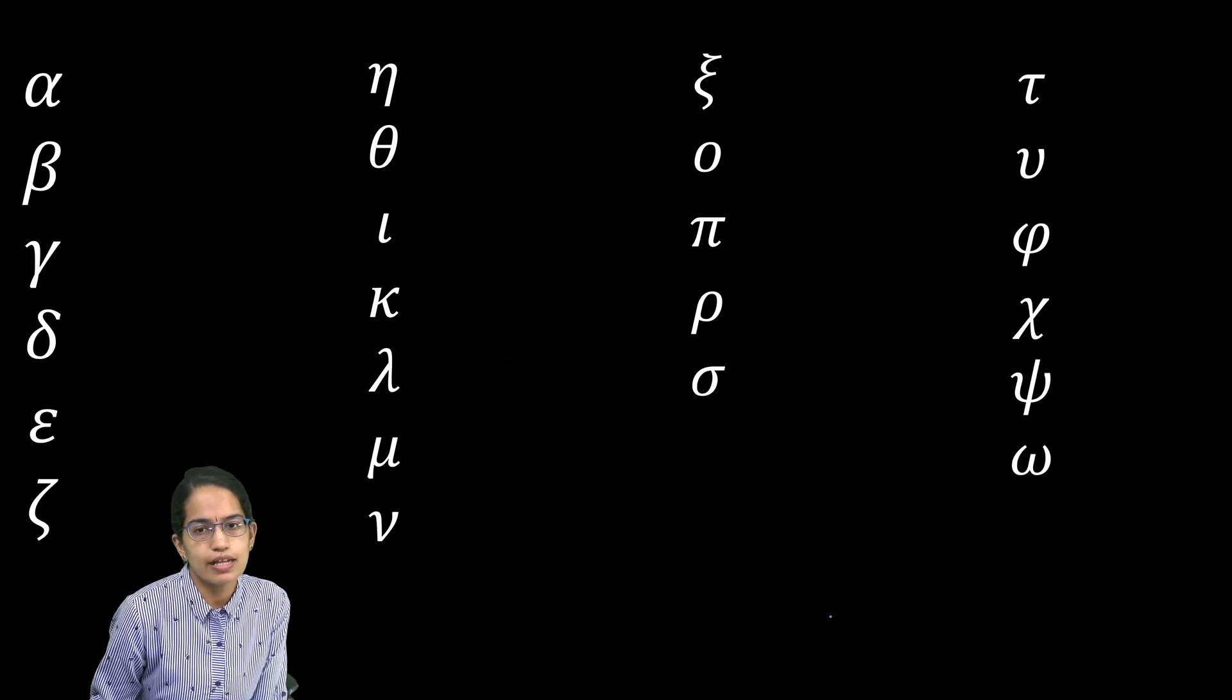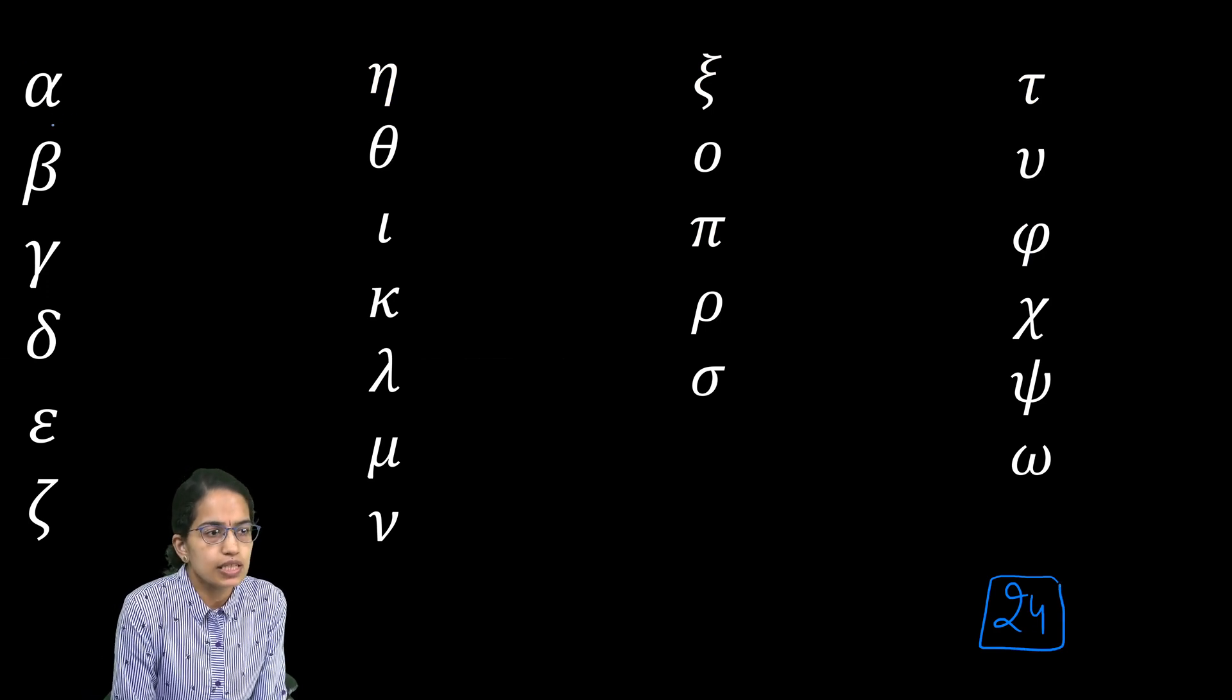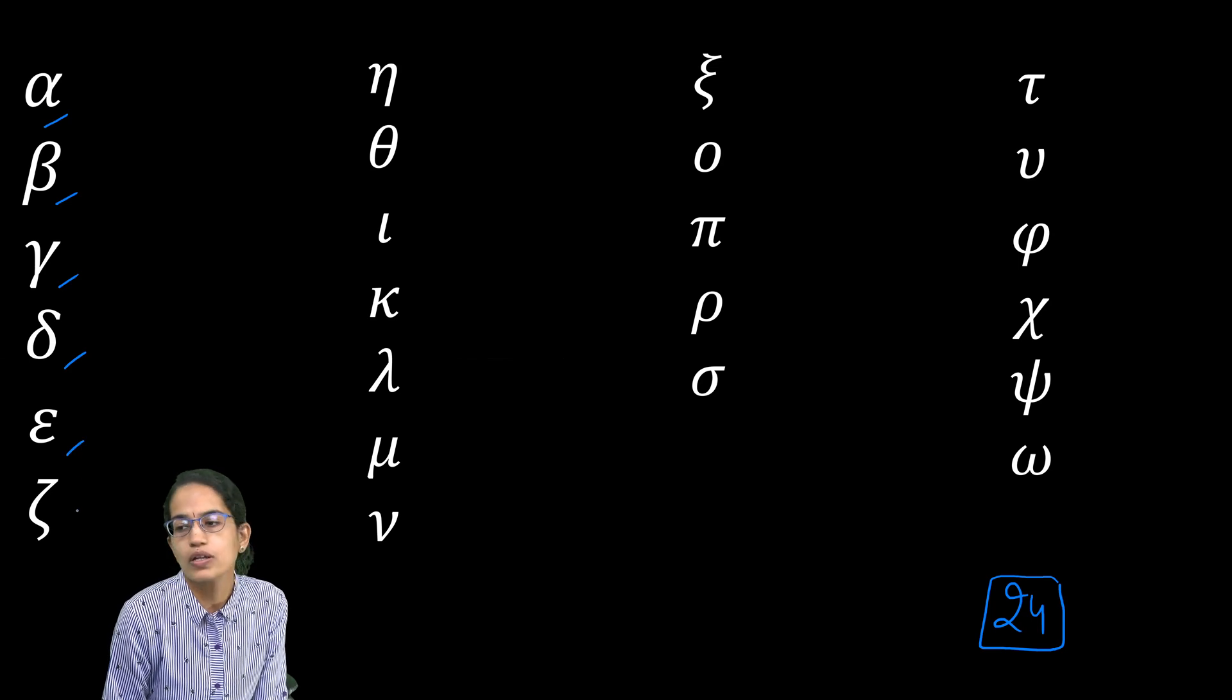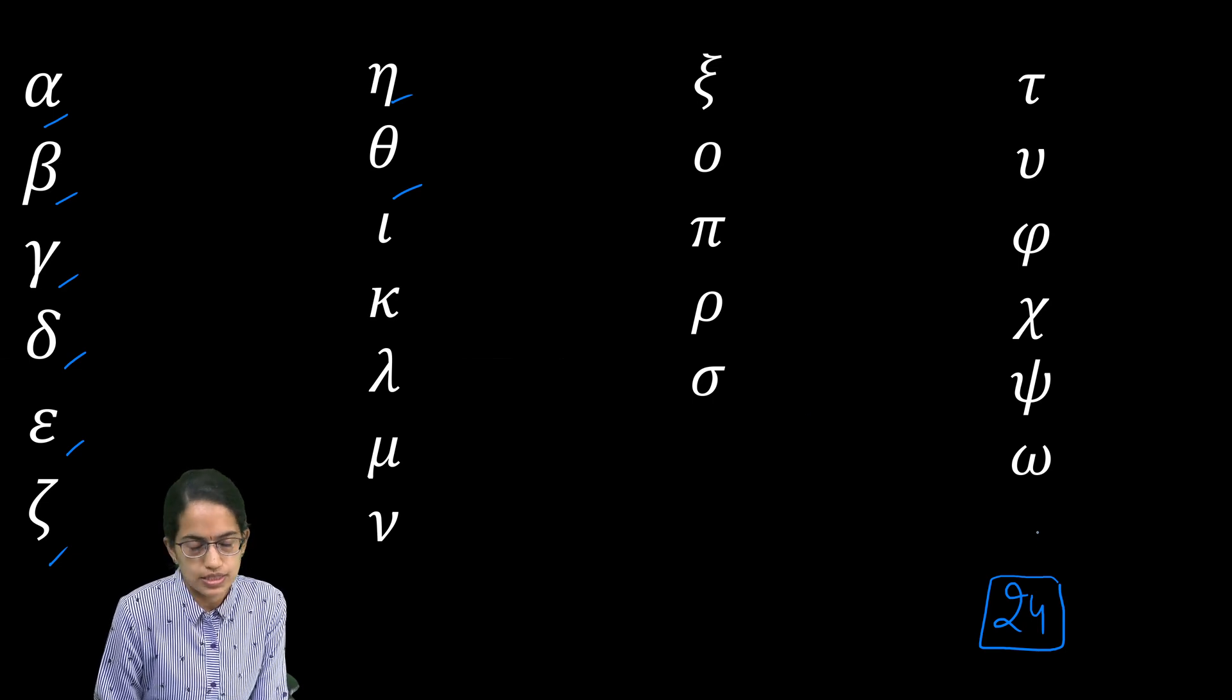In the Greek alphabets, as we can see on the screen, there are 24 Greek alphabets. These start with alpha, beta, gamma, delta, epsilon, then you have zeta, eta, theta, and so on. So you have 24 letters here.